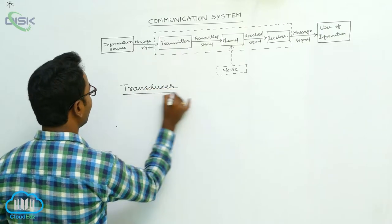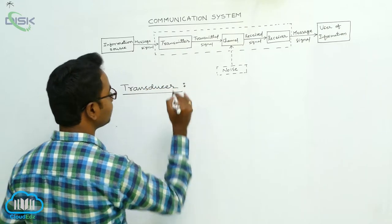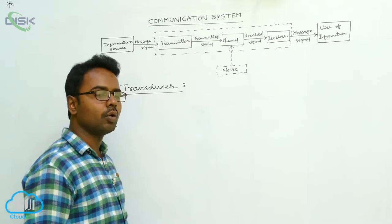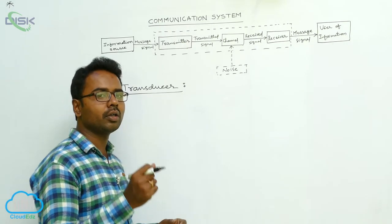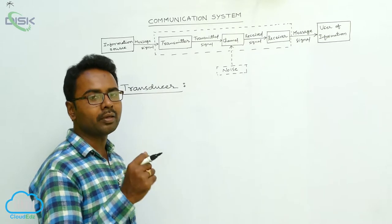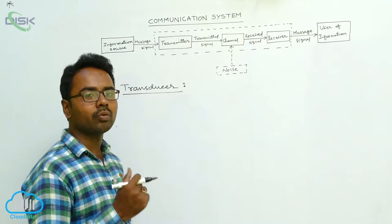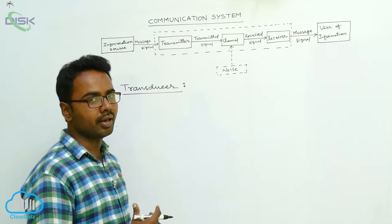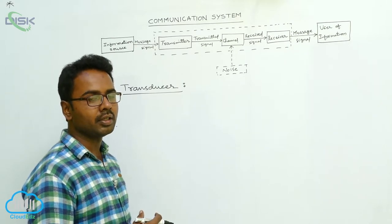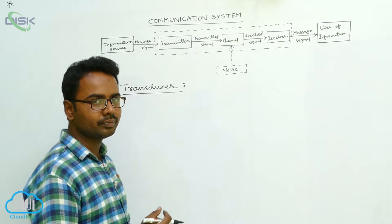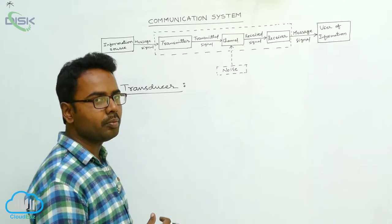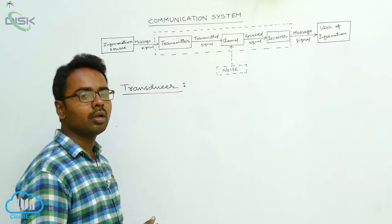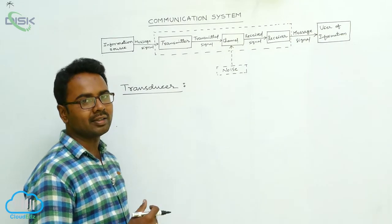A transducer is a device which converts energy from one form to another form. The best example is the microphone — when we are talking into a microphone, it converts voice signals into electric signals.